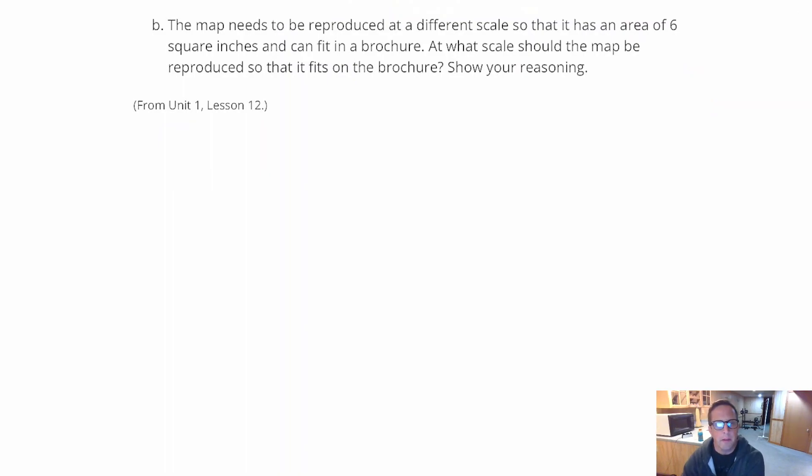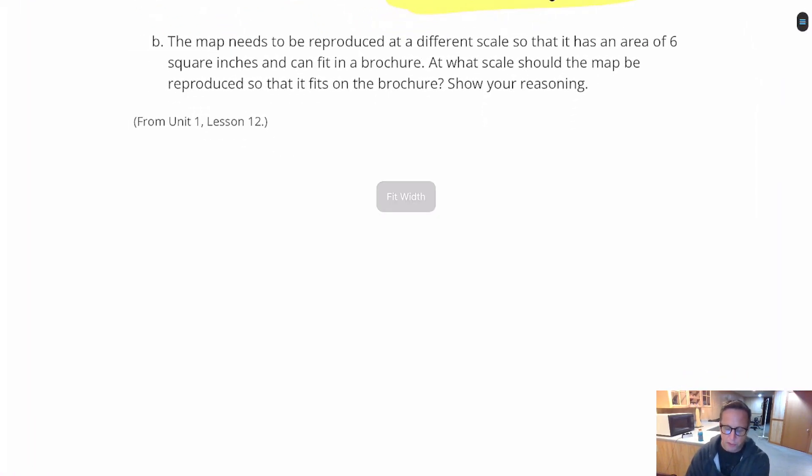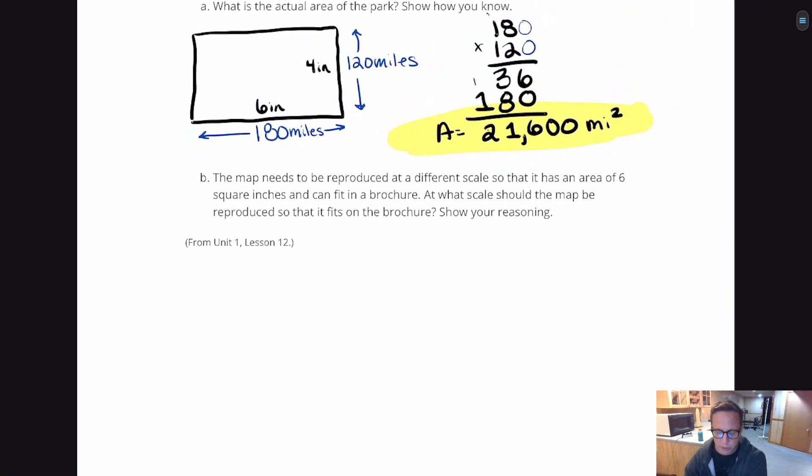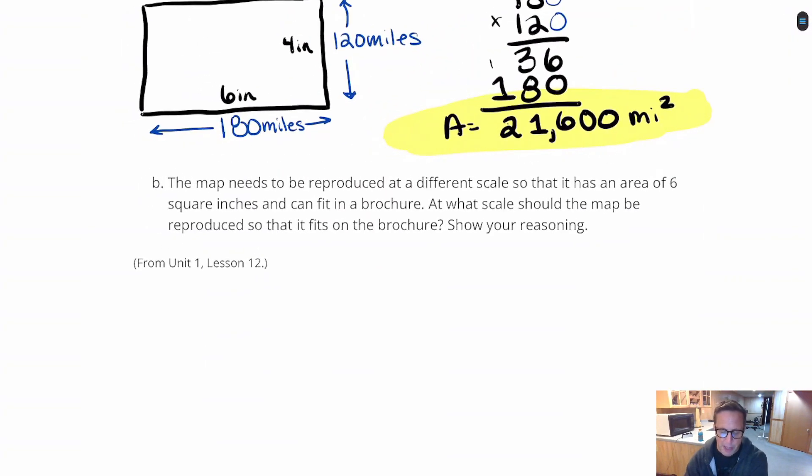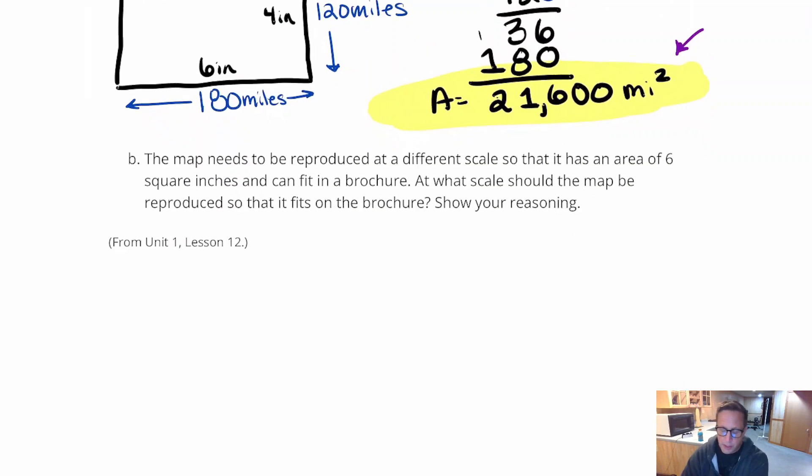Next up we have B, the map needs to be reproduced at a different scale so that it has an area of 6 square inches and can fit in the brochure. At what scale should the map be reproduced so that it fits on the brochure? Show your reasoning. So what we got here is, it's going to help to draw this out somewhat. And it also is going to help us to refer back to the previous problem. Because we got an area of 21,600 square miles.